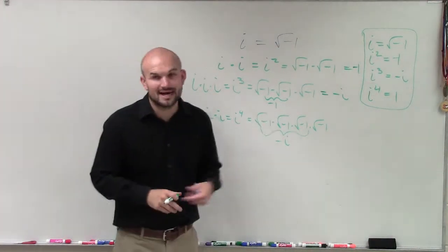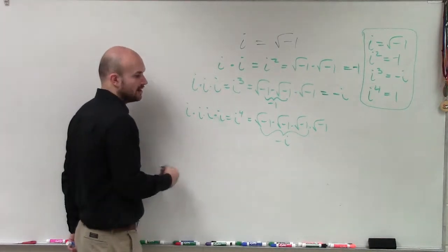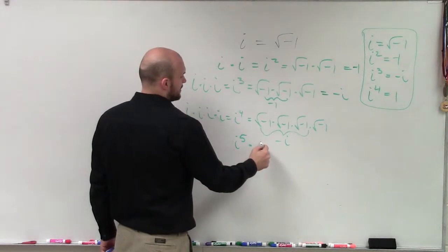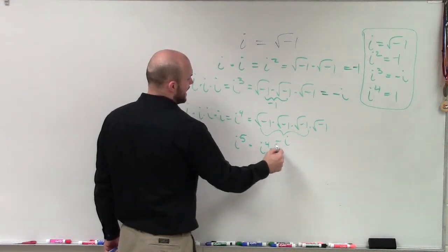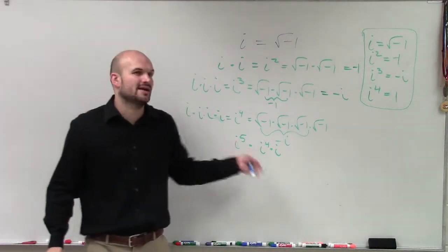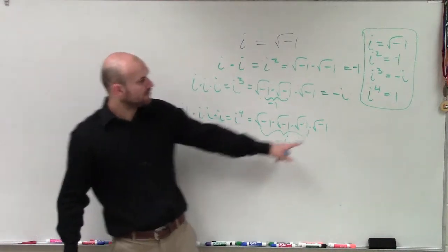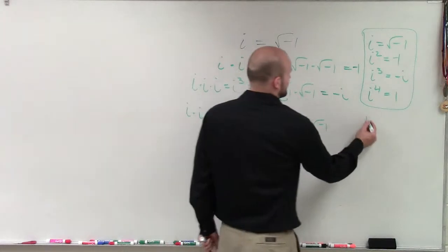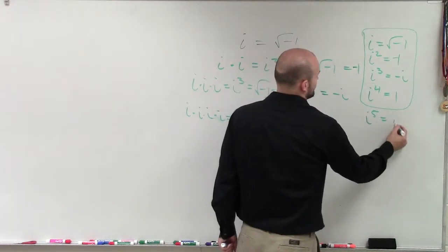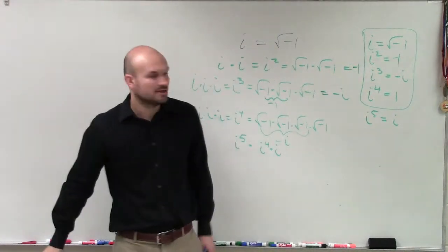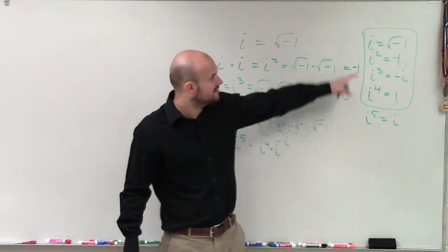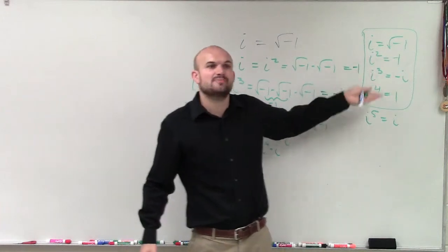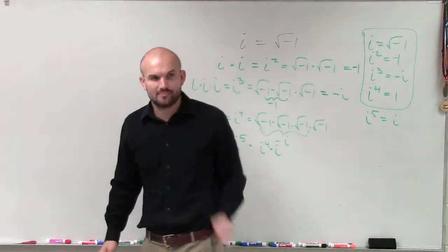Going further, i to the fifth equals i to the fourth times i. Since i to the fourth is 1, 1 times i is just i. So this pattern repeats after i to the fourth — it repeats and repeats.